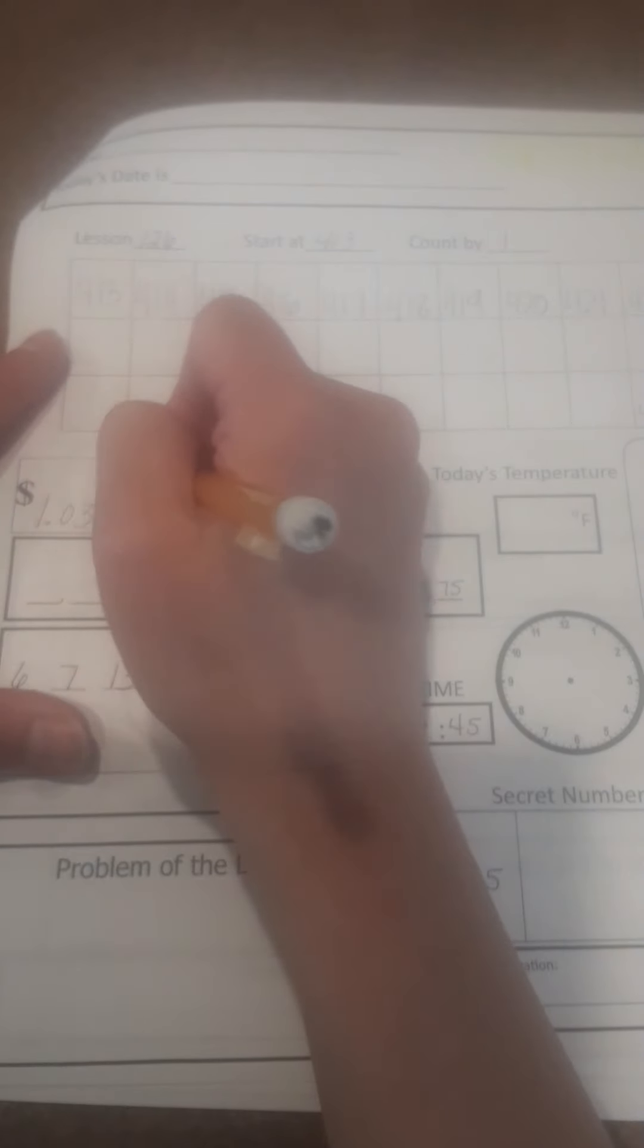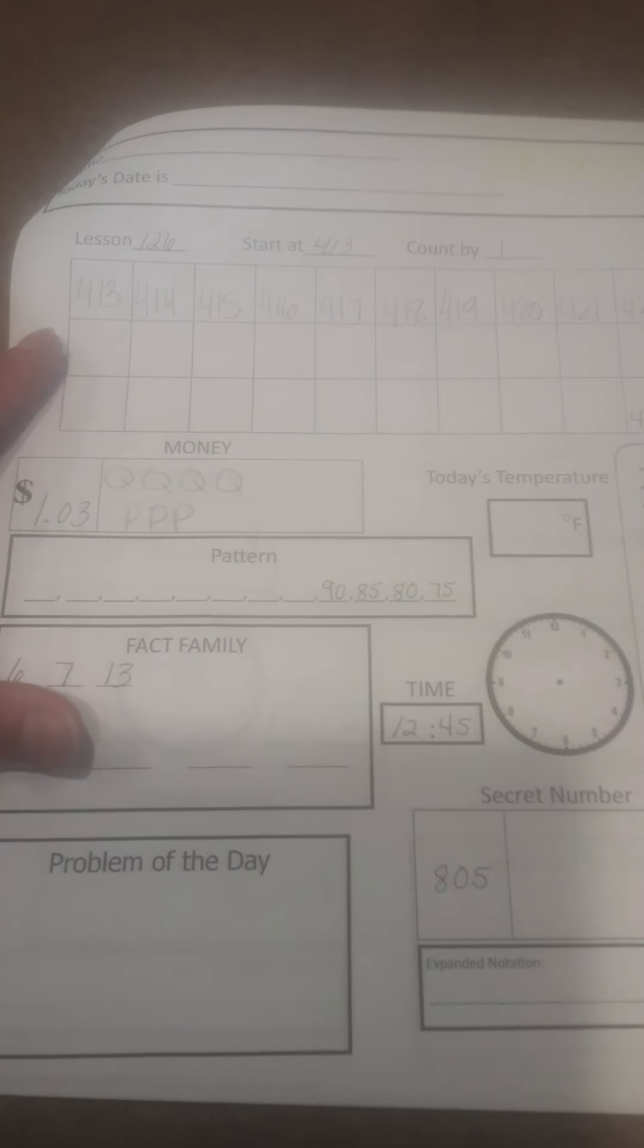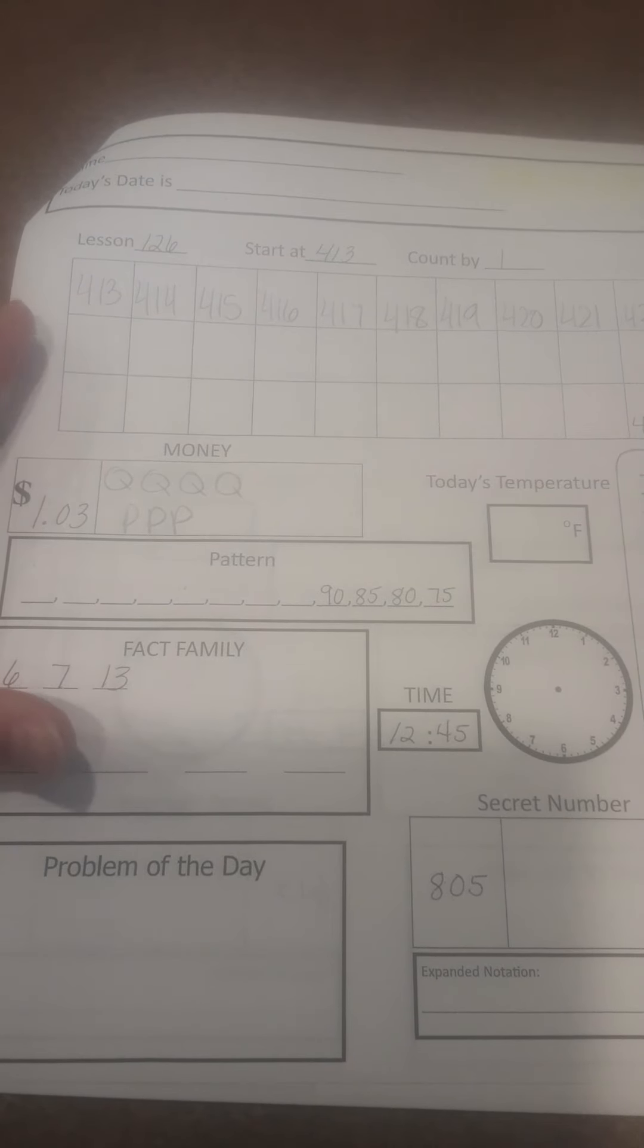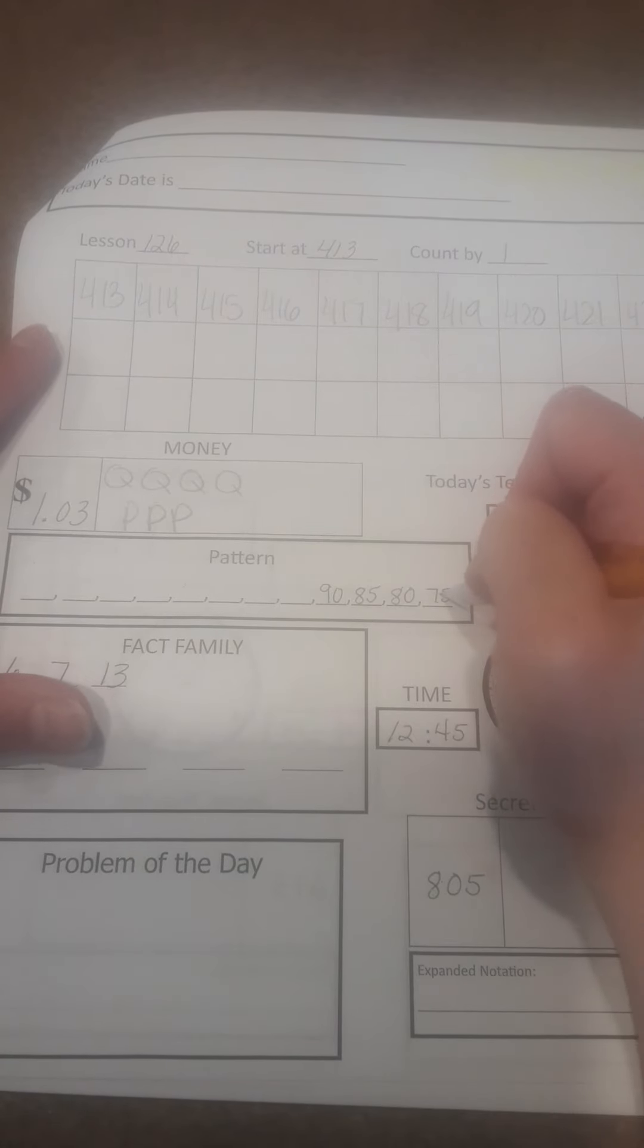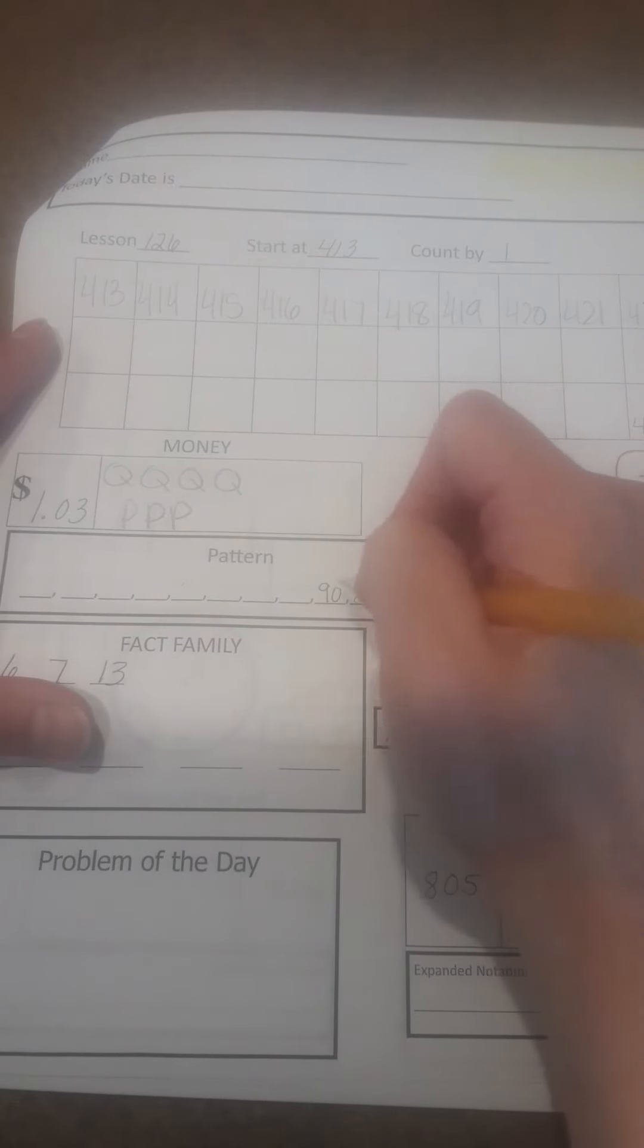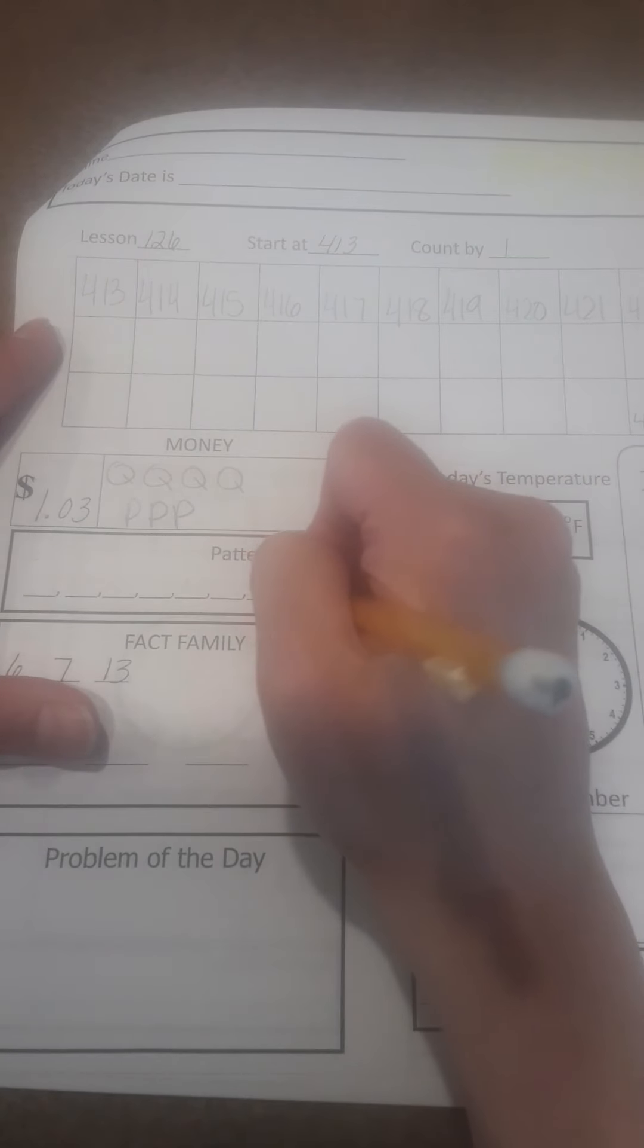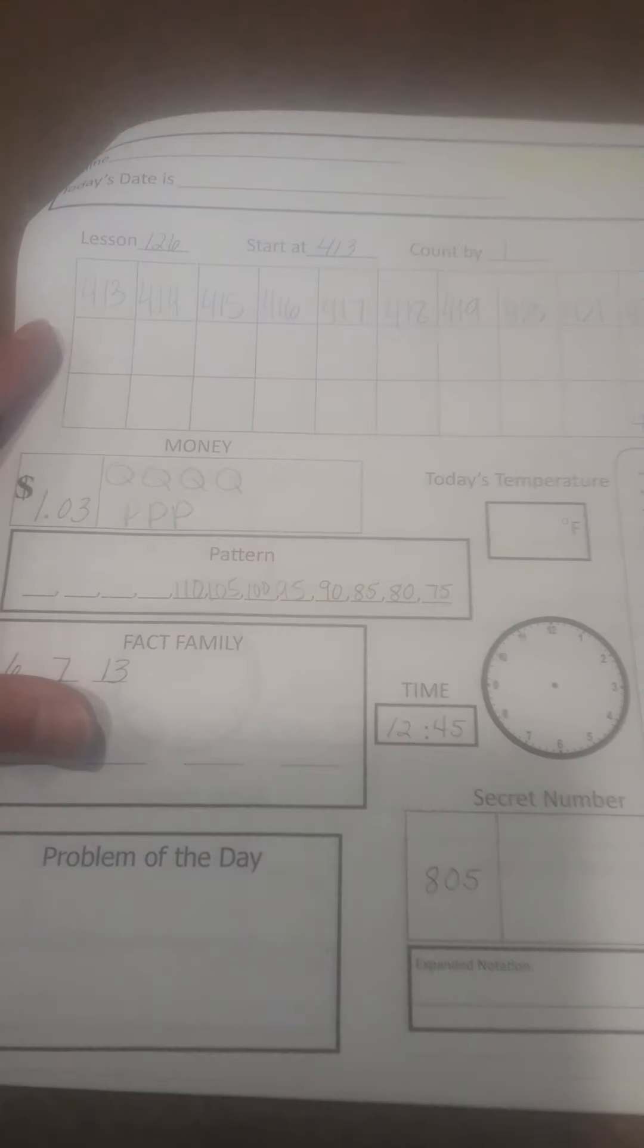Alright, money, $1.03, 4 quarters. And your only option, 3 pennies. Okay, so our pattern is a good way to look at it, is just go this way. 75, 80, 85, 90. Well, 95, 100, 105, 110. There you go.